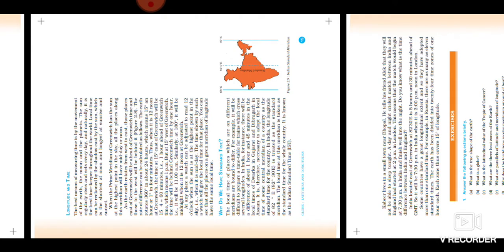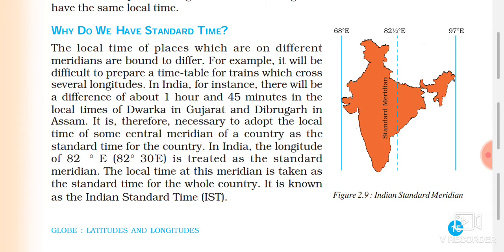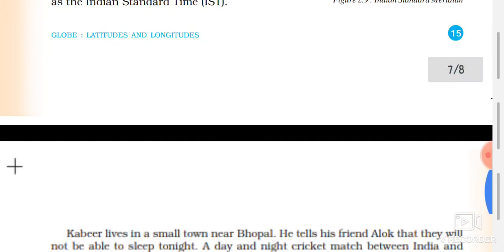In India, the longitude of 82 degrees 30 minutes east is treated as the standard meridian. The local time of this meridian is taken as the standard time for the whole country. It is known as Indian Standard Time.